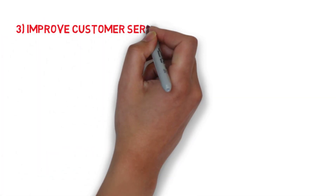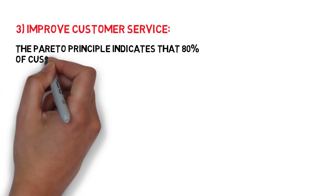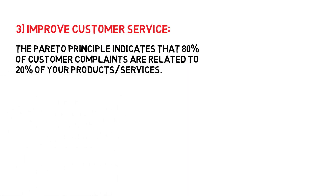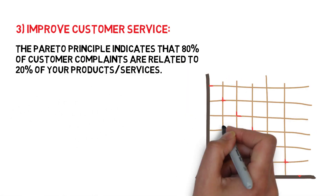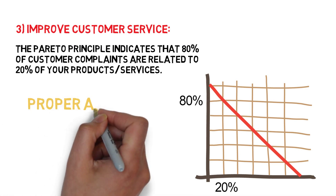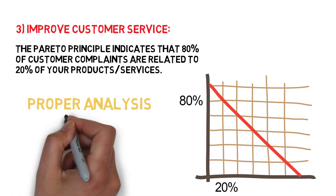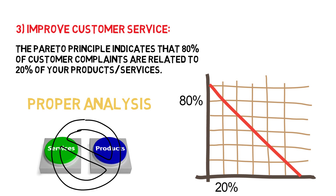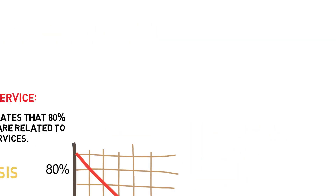Thirdly, improve customer service. The Pareto Principle indicates that 80% of customers' complaints are related to 20% of your products or services. So, a proper analysis of which products or services are causing problems for the business can help to permanently sort out customer service issues.